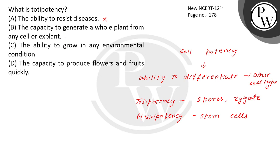How is totipotency? The correct answer is: the capacity to generate a whole plant from any cell or explant. The ability to grow in any environmental condition. The capacity to produce flowers and fruits quickly does not show totipotency. Totipotency means a cell can become a whole organism.